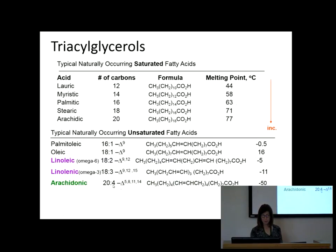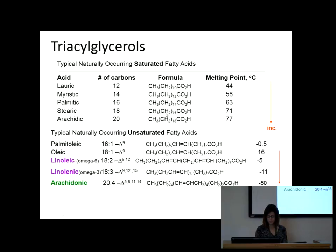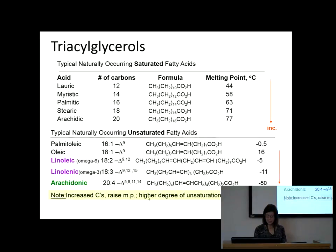Arachidonic acid has four double bonds — that's just crazy — and a melting point of minus 50°C, so it's going to be liquid. When you have an unsaturated fatty acid at room temperature, it is liquid — also known as an oil. The saturated fatty acids at room temperature are going to be solids — solid fats. Increased number of carbons raises the melting point; a higher degree of unsaturation, meaning more double bonds, lowers the melting point.